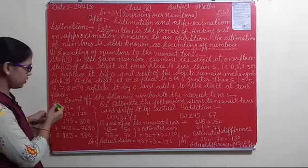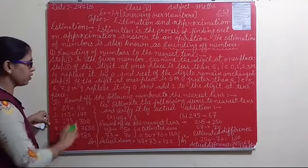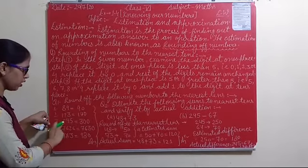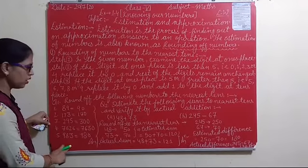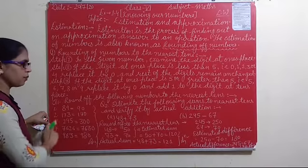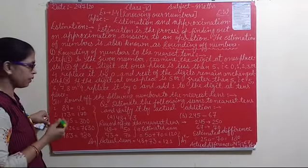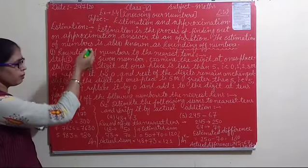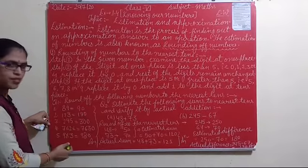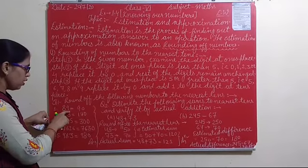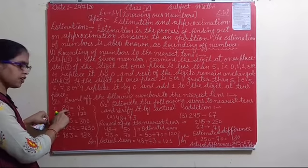Question number one: Round off the following numbers to the nearest 10. The numbers are 89, 173, 295, 7626, and 983. You have to write these given numbers rounded off to the nearest 10, following the steps we just learned. First number: 89. The one's place digit is 9.